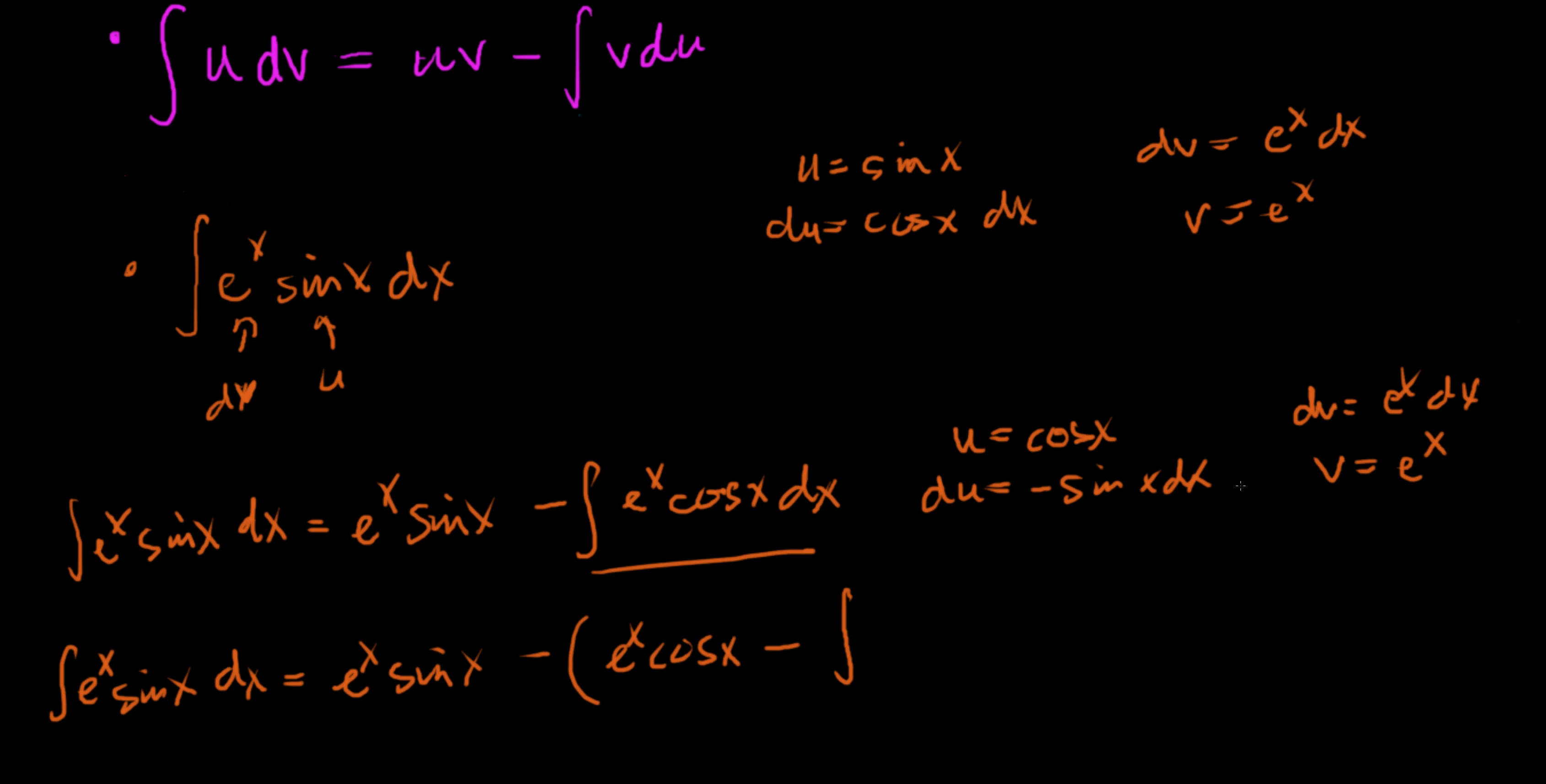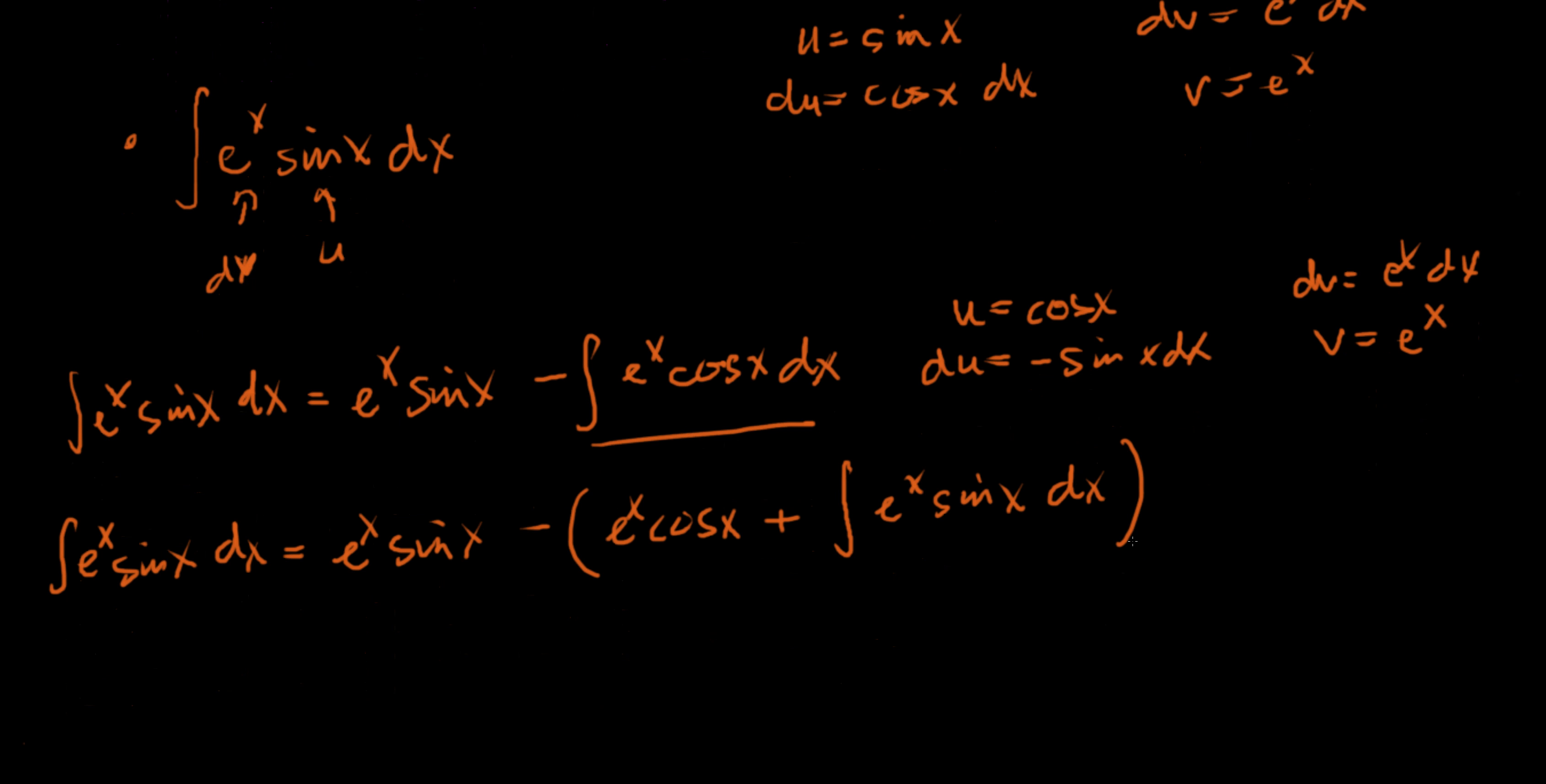So it's u times v, we have e to the x times cosine of x, minus vdu. Here v is e to the x, du is negative sine of x. I'm going to bring that negative out front and make that plus sine of x dx.